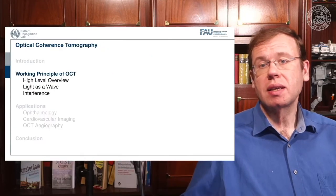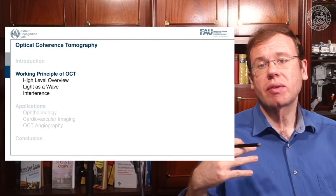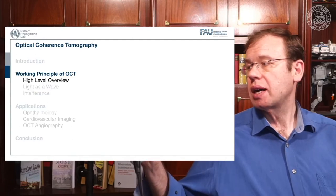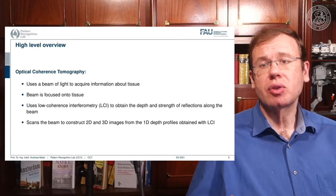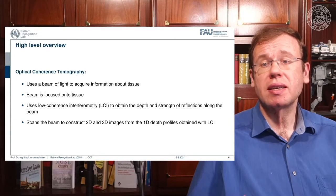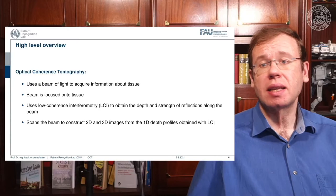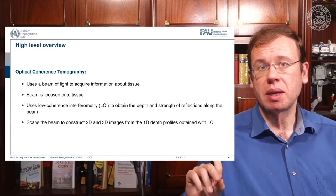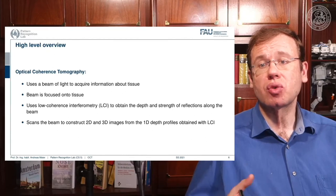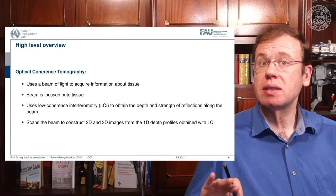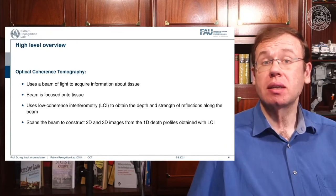The working principle of OCT is described at several levels. Starting with a high-level overview: OCT uses a beam of light to acquire information about tissues. The beam is focused onto the tissue, and we use low coherence interferometry — LCI — to obtain the depth and strength of reflections along the beam. Then we scan and reconstruct 2D or 3D images from 1D depth profiles, bringing back the concept of A-scan and B-scan from ultrasound.